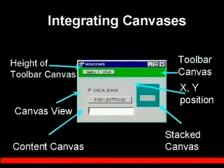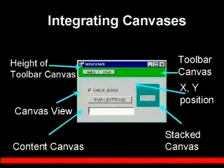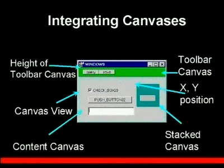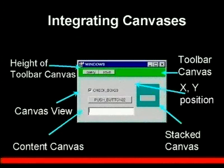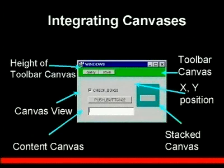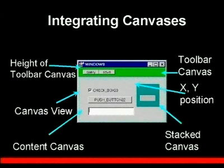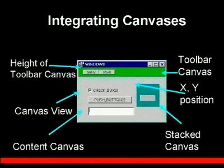This is a better way of seeing the integration of different canvas types into one form. The toolbar canvas is that bar on the top with two buttons — its height controls the bar width, and you can make it whatever width you want. The content canvas on the bottom fills up the whole window, and its view is essentially the same as the window view.